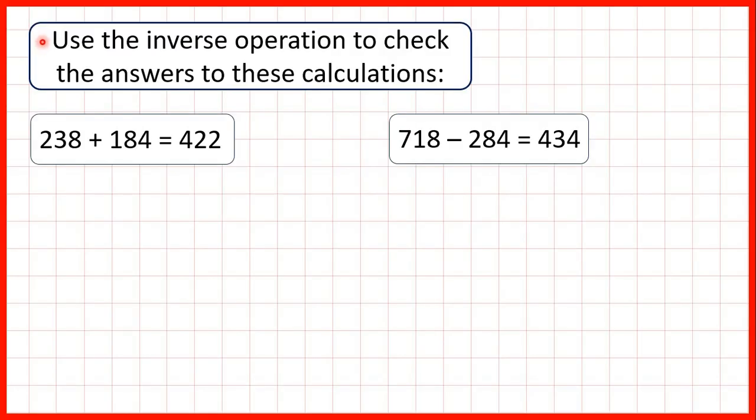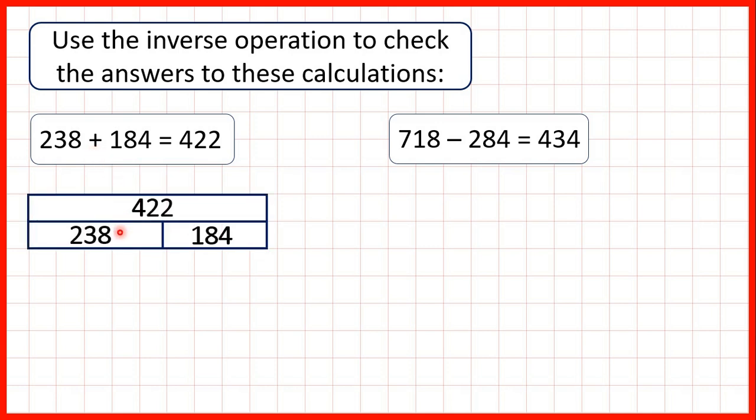We need to use the inverse operation to check the answers to these calculations. So first we have 238 plus 184 equals 422. Now we can represent addition calculations using bar models. So we can have the two numbers that we're adding on the bottom and then our total on top.